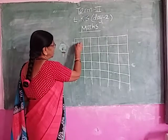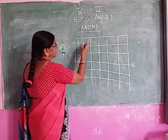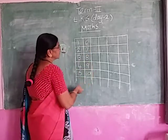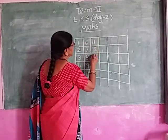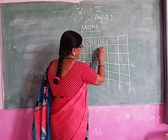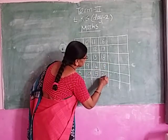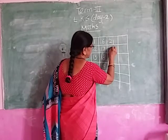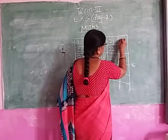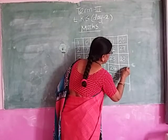Look at my children. 16, 17, 18, 19, 20, 21, 22, 23, 24, 25, 26, 27, 28, 29, 30.